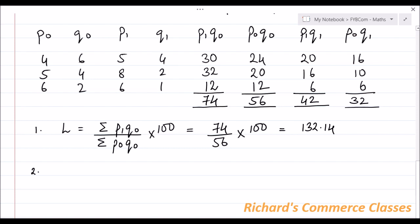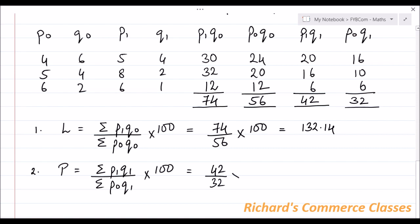Next, calculating Paasche's Index Number: P = (ΣP1Q1 / ΣP0Q1) × 100 = (42 / 32) × 100 = 131.25.